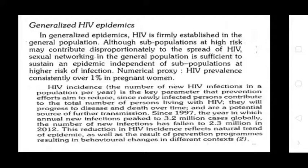HIV incidence refers to the number of HIV infections in a population per year. It is a key parameter that prevention efforts aim to reduce. Newly infected persons contribute to the total number of persons living with HIV, will progress to disease and death over time, and are the potential source of further transmissions. Since 1997, when annual new infections peaked at 3.2 million globally, the number of new infections has fallen to 2.3 million in 2012, reflecting natural epidemic trends as well as the results of prevention programs.